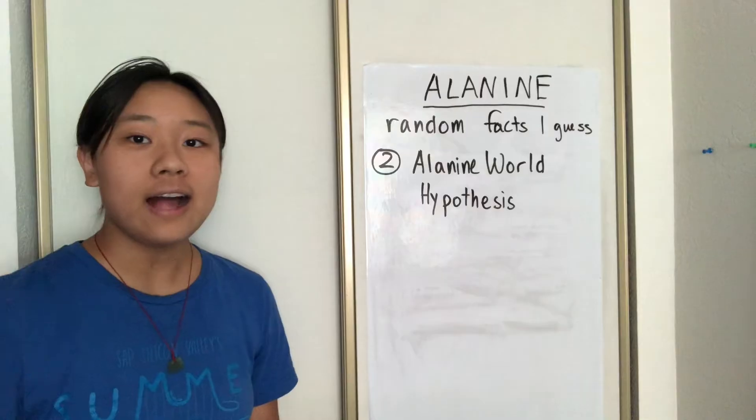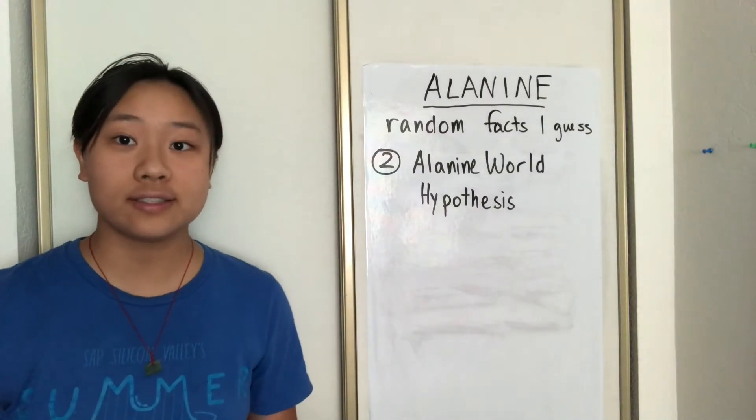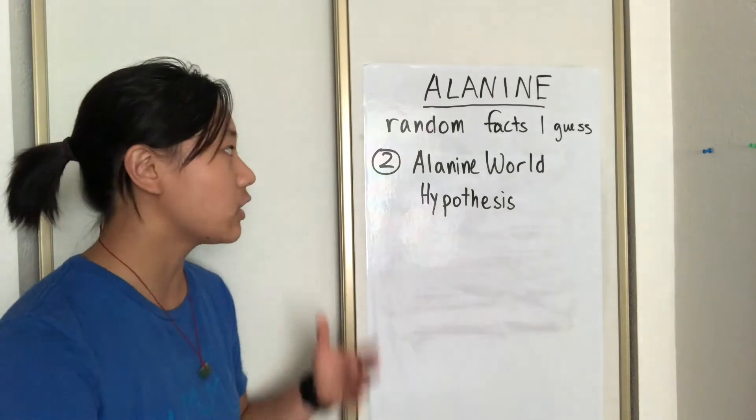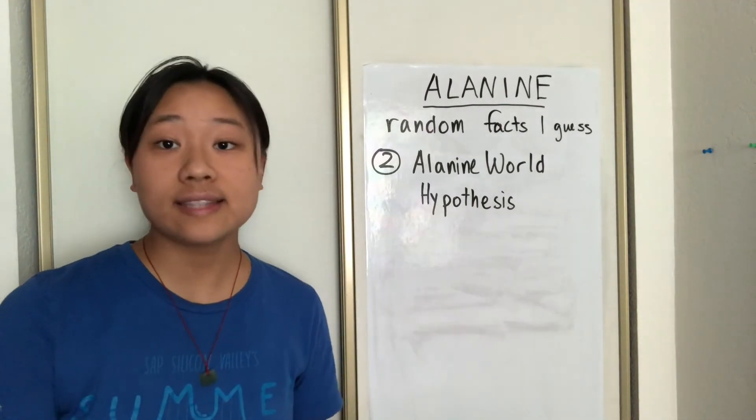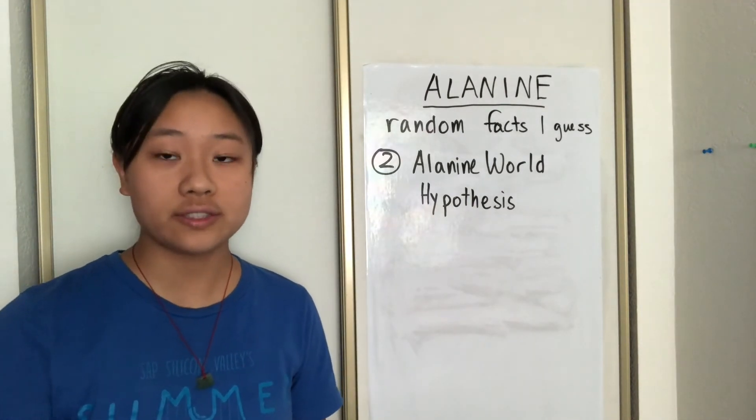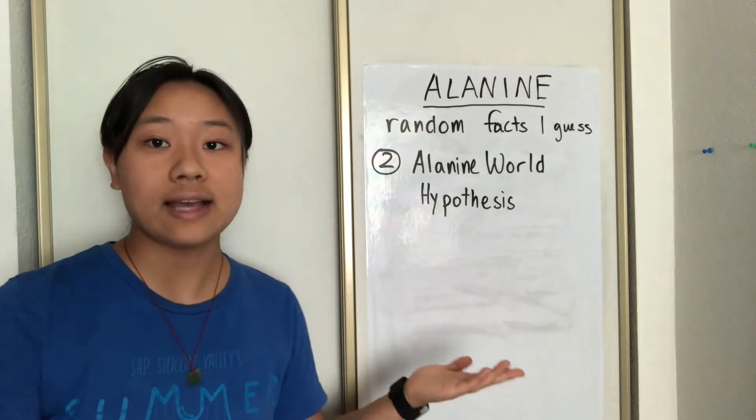Fun fact number two, alanine is actually considered to be one of the earliest amino acids to evolve, which is why there's something called the alanine world hypothesis, which states that the development of other amino acids along with the genetic code system was developed with alanine as its scaffold.